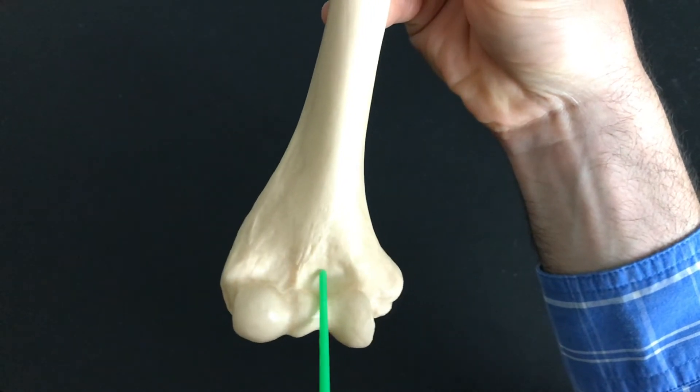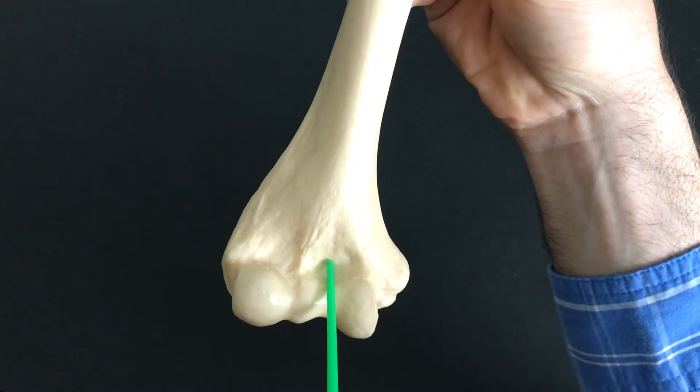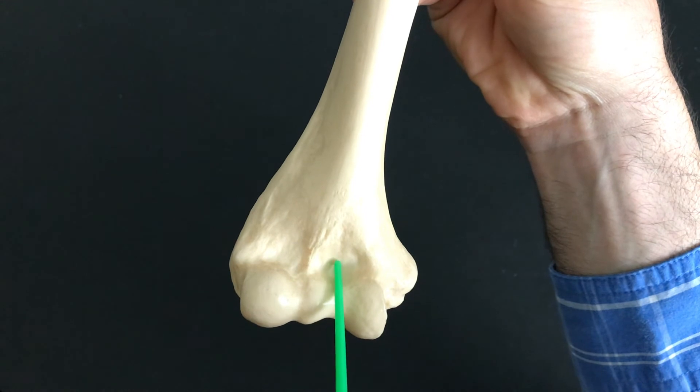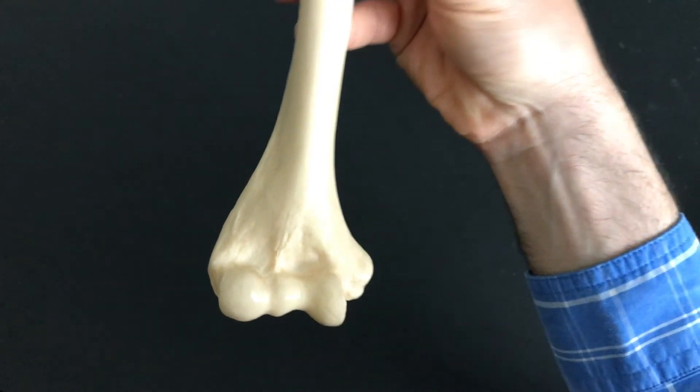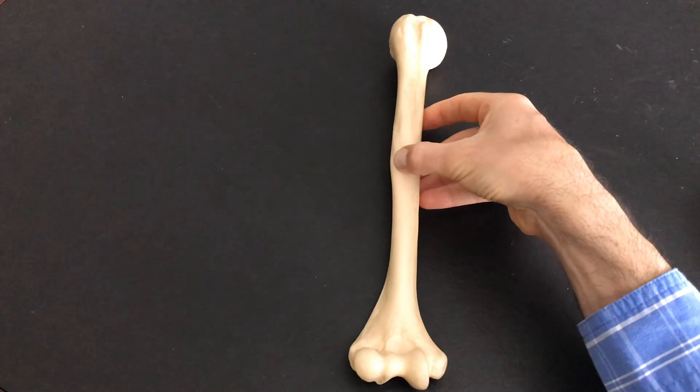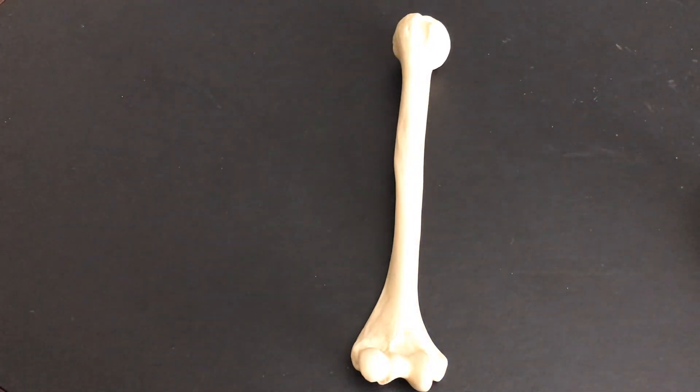And this little indentation right there is called the coronoid fossa. This is all structures that we see on the anterior view of the humerus.